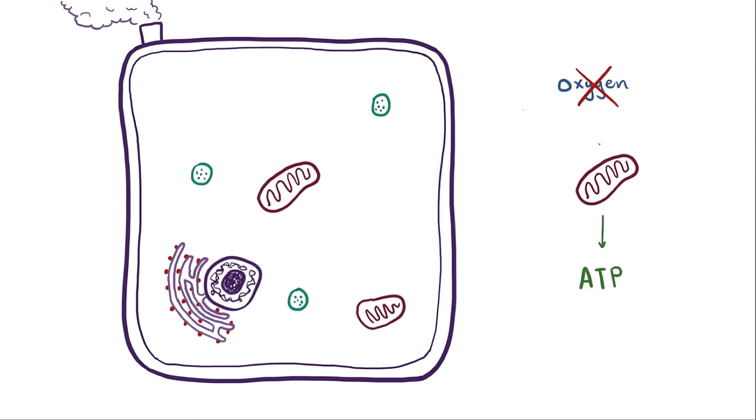When the cell doesn't get enough oxygen, and so payroll can't produce the ATP that they need to pay the workers to do their jobs, the whole cellular factory can be damaged or even die, and we call that process hypoxia, where hypo means less than normal and oxia means oxygenation.